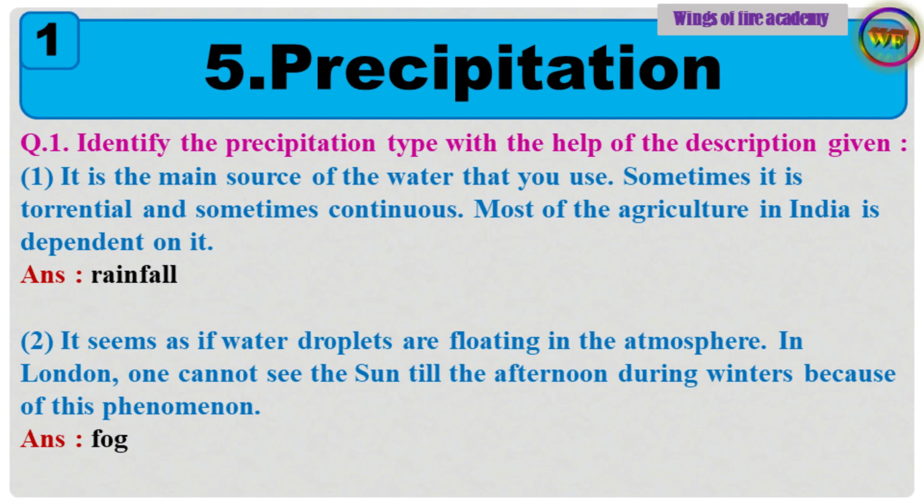Question 1: Identify the precipitation type with the help of the description given. 1. It is the main source of the water that you use. Sometimes it is torrential and sometimes continuous. Most of the agriculture in India is dependent on it. Answer: Rainfall.